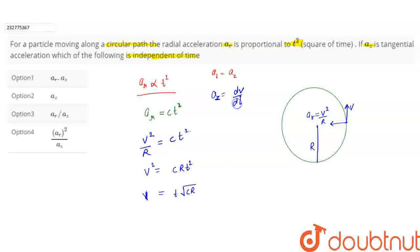Because this velocity V is linear velocity and az is tangential acceleration. Tangential acceleration is the rate of change of linear velocity with respect to time. So az is dv by dt and it will be equal to differentiating this expression.